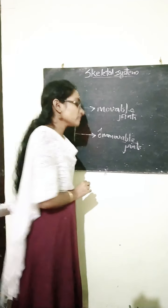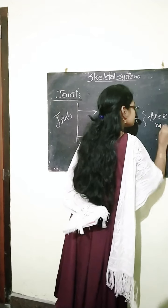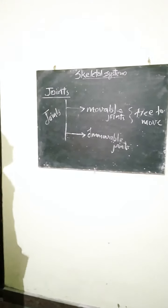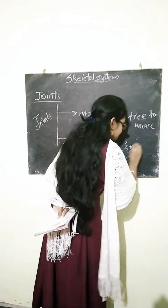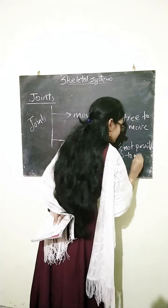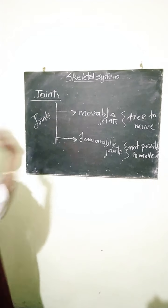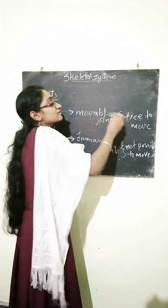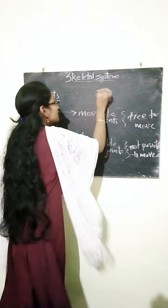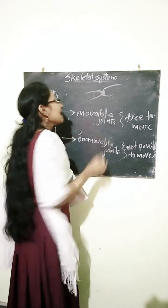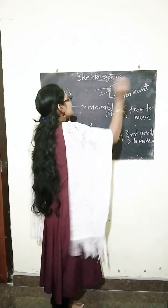Movable joints means the joints can be moved — they are very free to move. Immovable joints means it is not possible to move these joints. There are two types: movable joints and immovable joints. Movable joints are free to move because there is a fluid present between the bones, and that fluid is called lubricant.